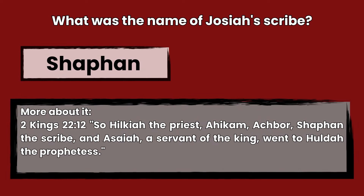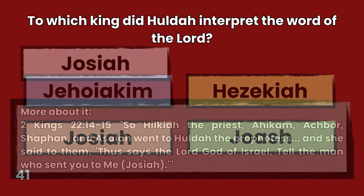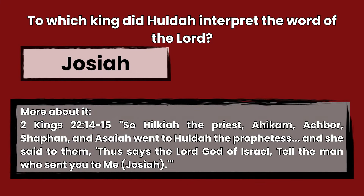Question 41: To which king did Huldah interpret the word of the Lord? Joachim, Hezekiah, Josiah, or Joash? Answer: Josiah. 2 Kings 22:14-15 — So Hilkiah the priest, Ahikam, Akbor, Shaphan, and Esaiah went to Huldah the prophetess, and she said to them, Thus says the Lord God of Israel, Tell the man who sent you to me — Josiah.